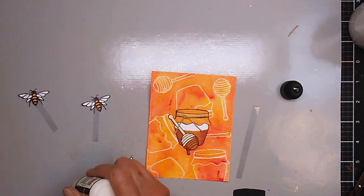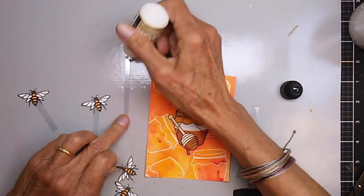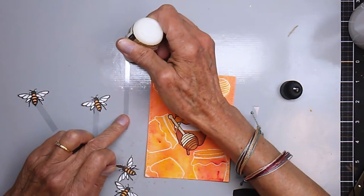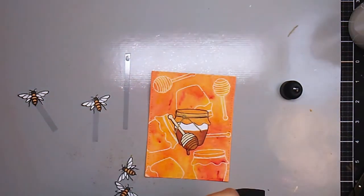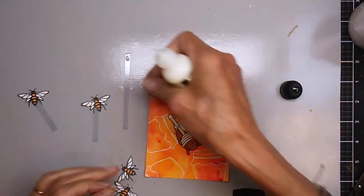Then I'm going to attach the bees to the acrylic strip, and then I'll attach them to the back of the honey pot.